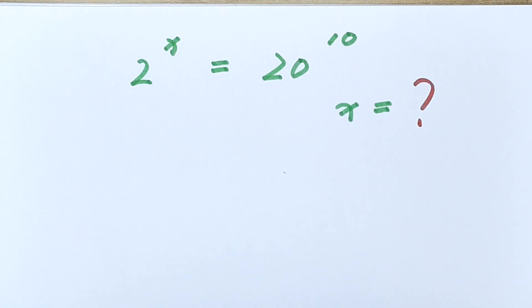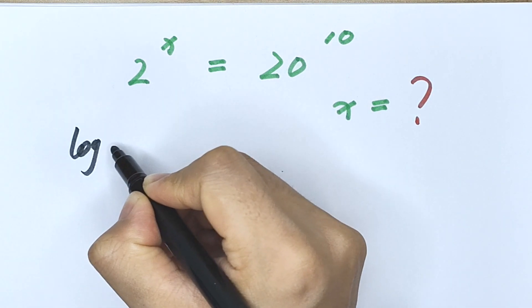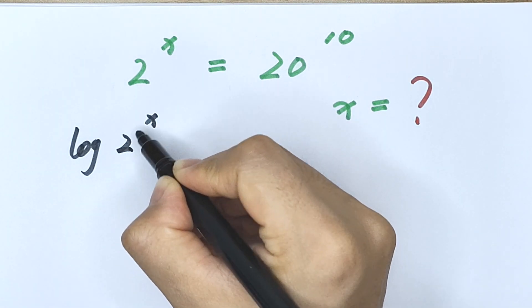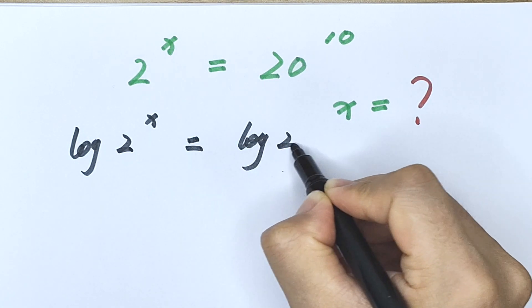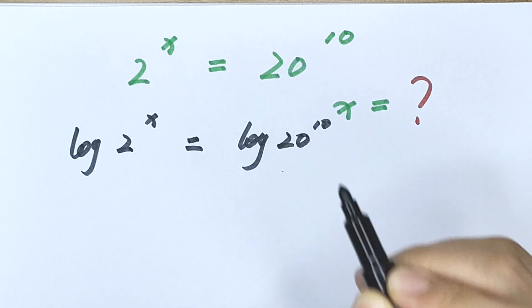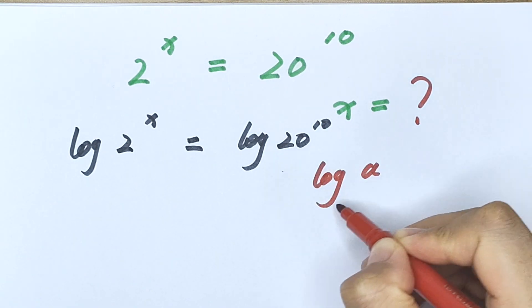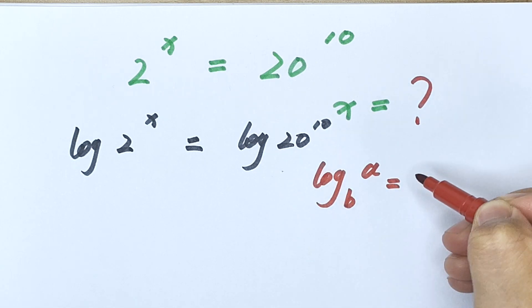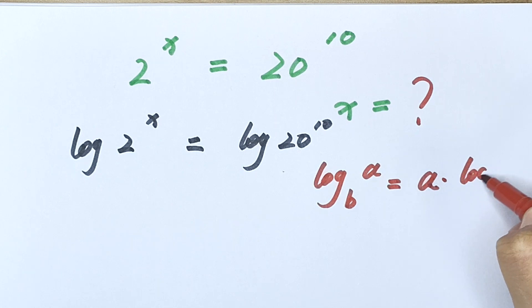So first we apply the log rule on both sides: log 2 to the power of x equals log 20 to the power of 10. Then log a to the power of b equals a times log b.